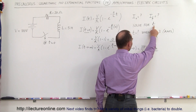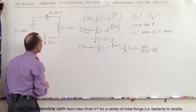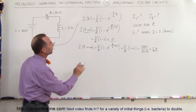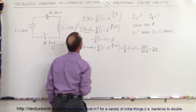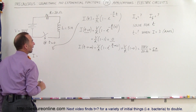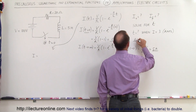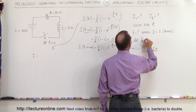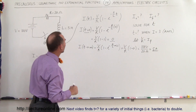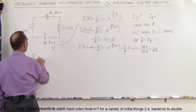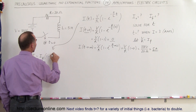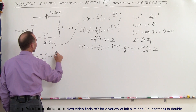To find that, we first need to solve the equation for T. We'll isolate the exponential portion. Let V over R equal I final, since that is the final current in the circuit. So I equals I final times (1 minus E to the minus R over L times T).